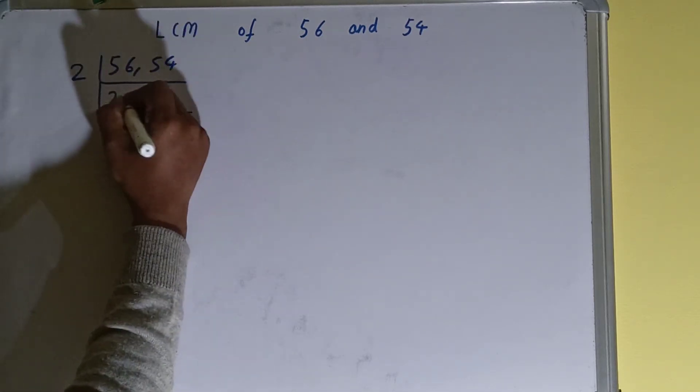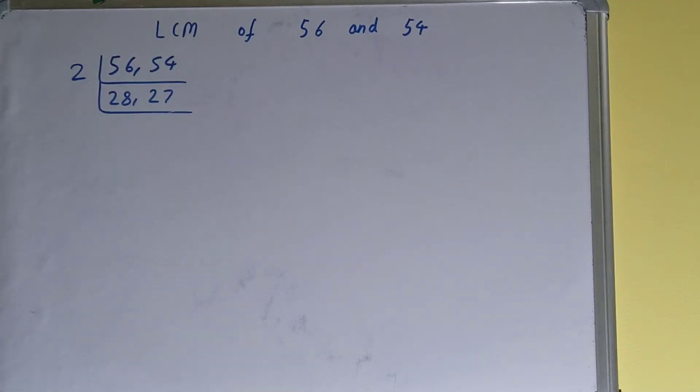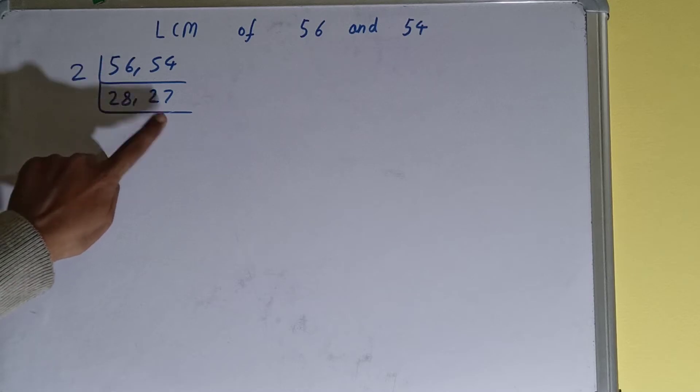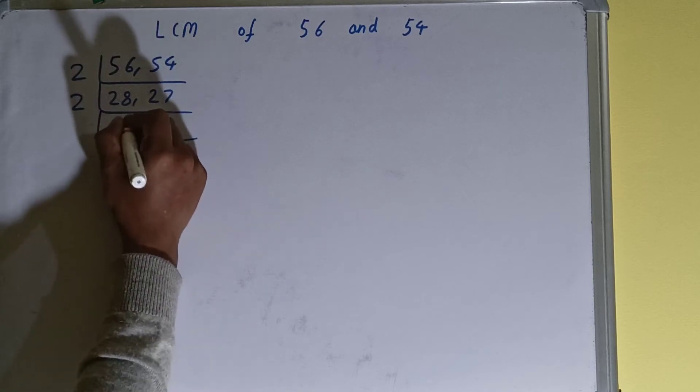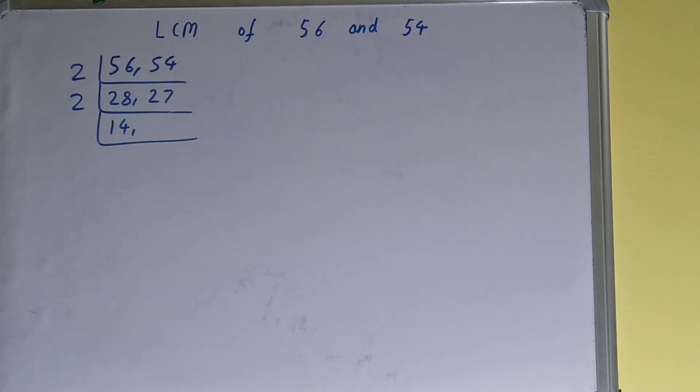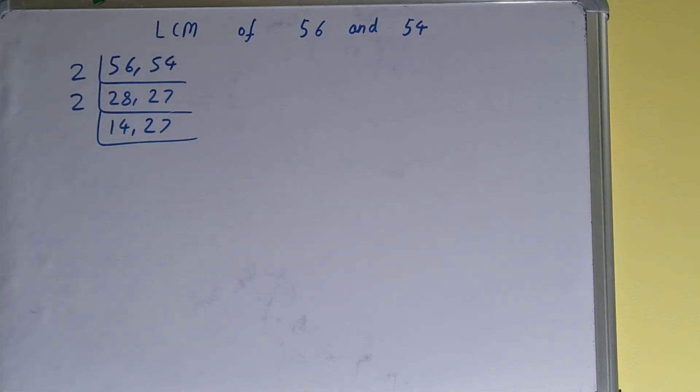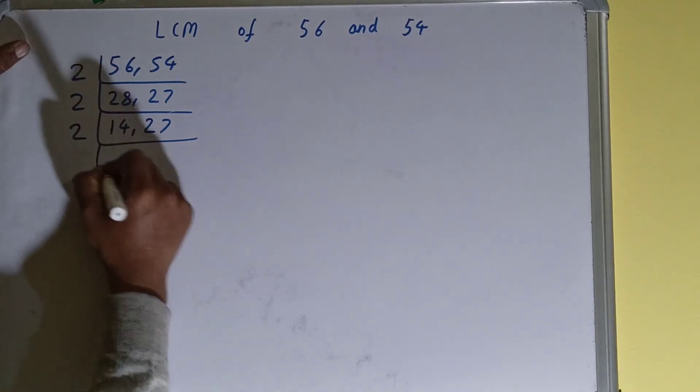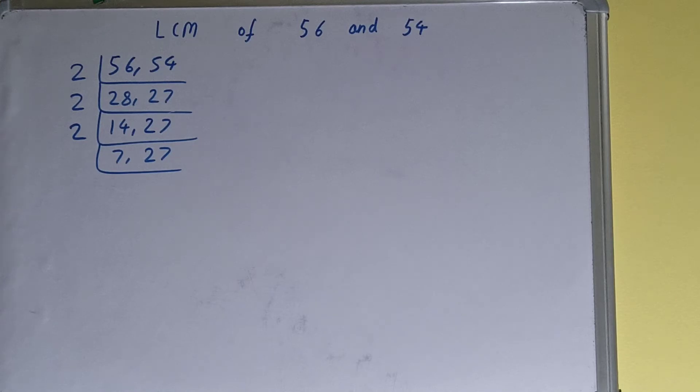This will become 28 on dividing, this will become 27. Now again, if we check, only the first number is divisible by 2, not the second one. So we'll divide only the first number and it will become 14. The second number 27 is not divisible, so we'll just copy this down. Now again, the first number is divisible, so we'll divide and it will become 7. The second number 27 is not divisible, so we'll copy this down.